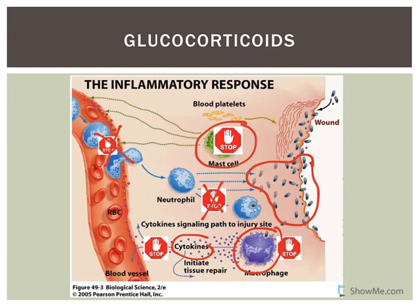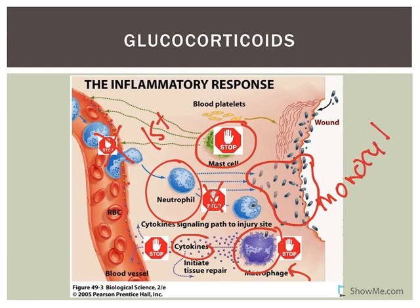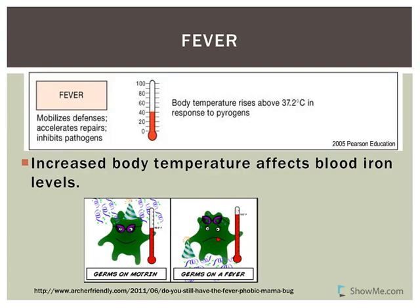In the inflammatory response, the first cells attracted to an area are neutrophils — they're first to come. The second are monocytes, and macrophages are just tissue monocytes. Eosinophils may also get involved, but primarily neutrophils and monocytes come to an area. The last component of the innate immune system to look at is fever.